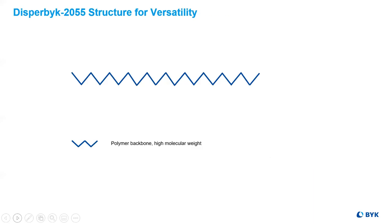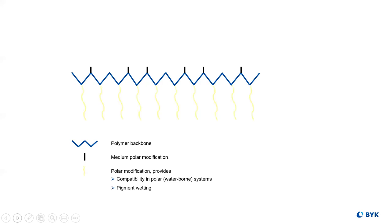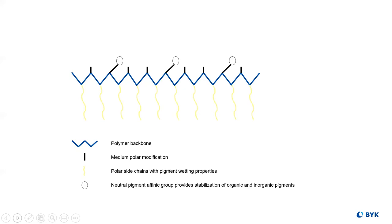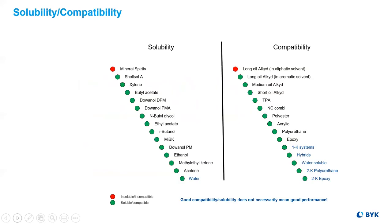Another new development showcased the versatility of polyacrylates. Starting with the basic backbone, we add medium polarity modification to allow for compatibility in low or medium polar solvent-borne systems. Then we add a polar modification for compatibility in waterborne systems and to ensure pigment wetting. We place neutral pigment affinity groups for the stabilization of both organic and inorganic pigments, and lastly we add basic pigment affinity groups to increase the versatility of pigment selection — resulting in one additive with wide compatibility and pigment versatility.